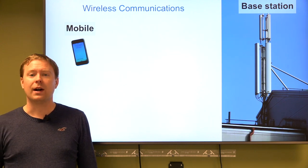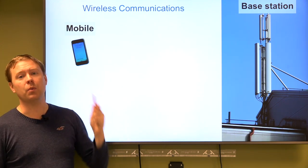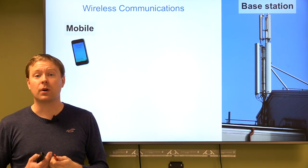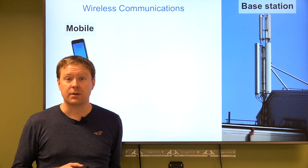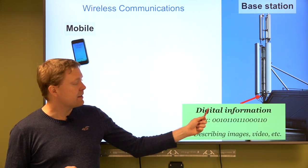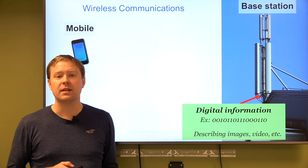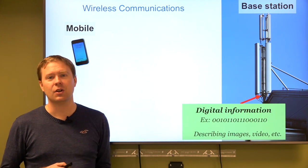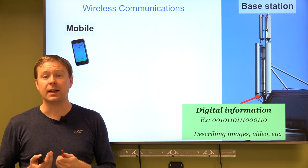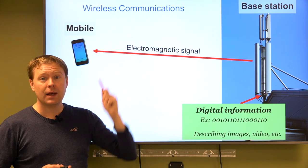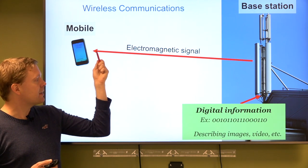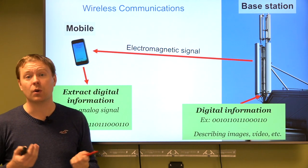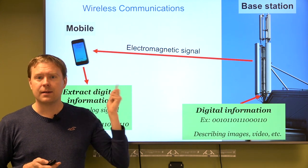This is all about wireless communication, particularly mobile phones. When your mobile is asking for videos, pictures, or text from the internet, it connects to a base station. This base station receives the digital information as a sequence of zeros and ones and needs to send it to the mobile phone by transforming it into an analog electromagnetic signal.